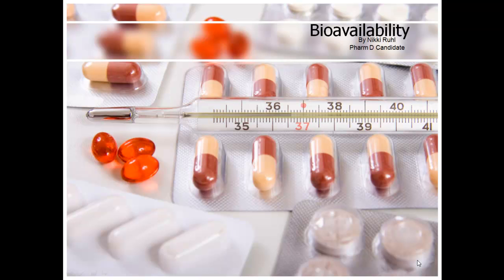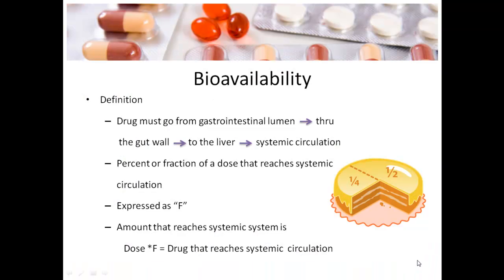Welcome back to another session of fun with pharmacokinetics. Today we're going to talk about bioavailability so we can understand what's going on when a drug enters the body. The first thing we need to know is that when a drug enters the body, it goes through a long journey before it can even reach systemic circulation. When a drug is first administered, it has to go through the gastrointestinal lumen.